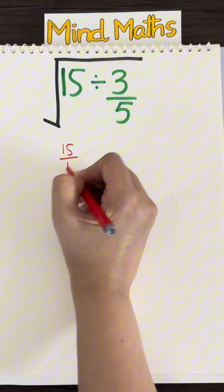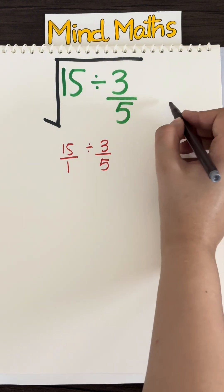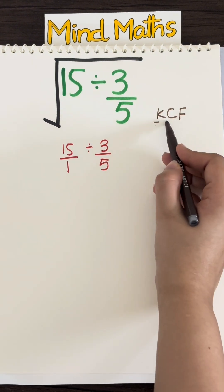I am going to write 15 as 15 over 1 and divide the fractions as it is. To divide these two fractions I am going to use the KCF method which is keep, change, and flip.